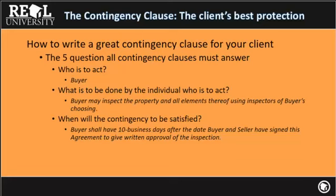Who is going to act in the real estate world is typically the buyer or the seller — not the plumber, not the electrician — because the buyer is going to engage the plumber. So it's still the buyer who has to act. For example: contingent upon the buyer hiring an electrician to certify the fuse panel box within the next 48 hours after acceptance of the purchase agreement. It's the buyer engaging the plumber. You don't want to say 'subject to plumber approving,' because somebody's got to hire the plumber. Who is to act is typically the buyer.